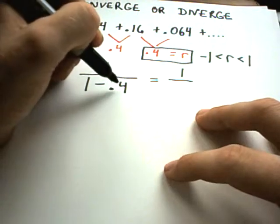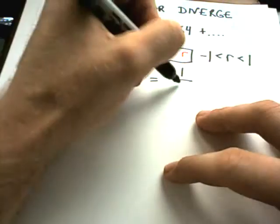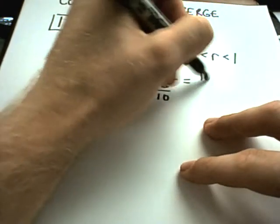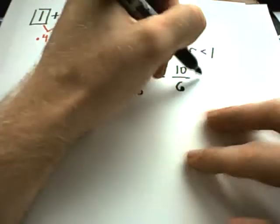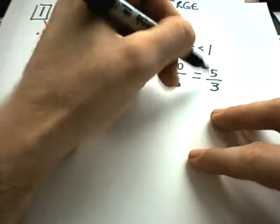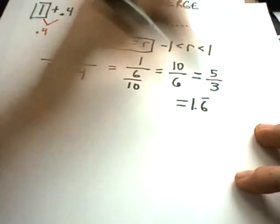Well, this is 1 over 0.6. 1 minus 0.4 is 0.6. I can write 0.6 as 6 tenths. That's 10 sixths if I flip it. And that's equivalent to 5 thirds, which is 1 and 2 thirds, which is 1.6 repeating.